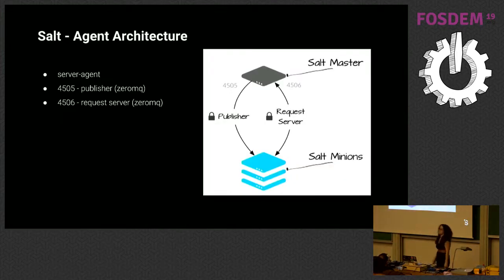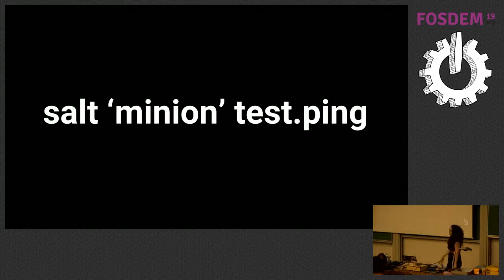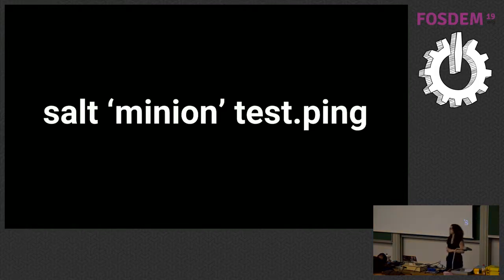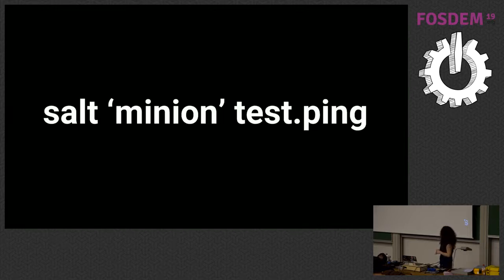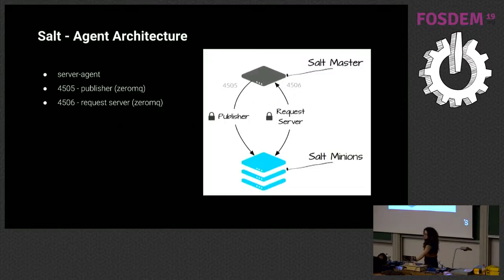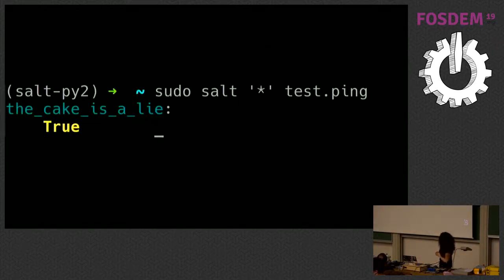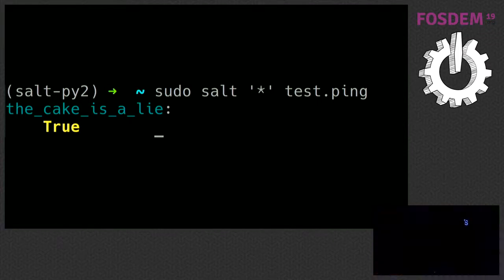When converting to an agentless solution, SSH is unidirectional, so we had to architect carefully to use the power of Salt but also use SSH. A quick example — our version of Hello World — is the salt CLI tool targeting whatever minion you want and running test.ping, which is an execution module. Execution modules are not meant to be idempotent; they're more meant to be run as one-off commands. The master publishes the command to the minion, the minion runs it, and returns the result through the request server.